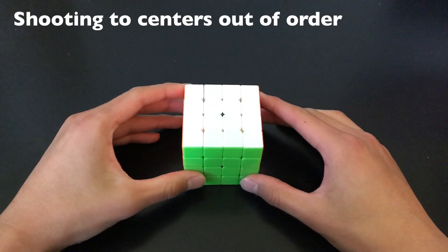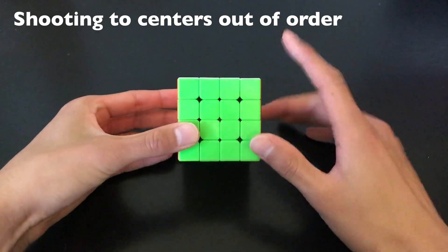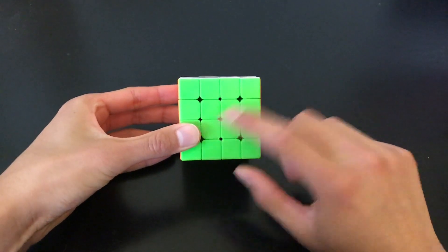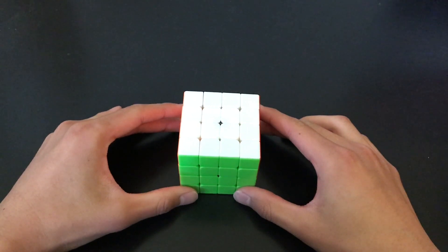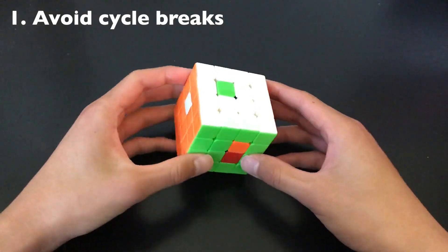Most people shoot the centers in a fixed order so that it's easier to keep track of which centers they've already targeted. For example, they might target this center first and then go clockwise from there. However, you shouldn't always stick to a fixed order because by going out of order, you can avoid cycle breaks and force better comms. Let's take a look at an example.